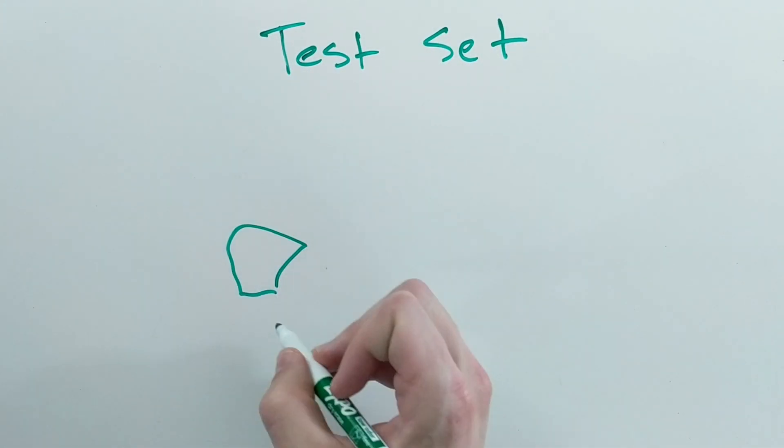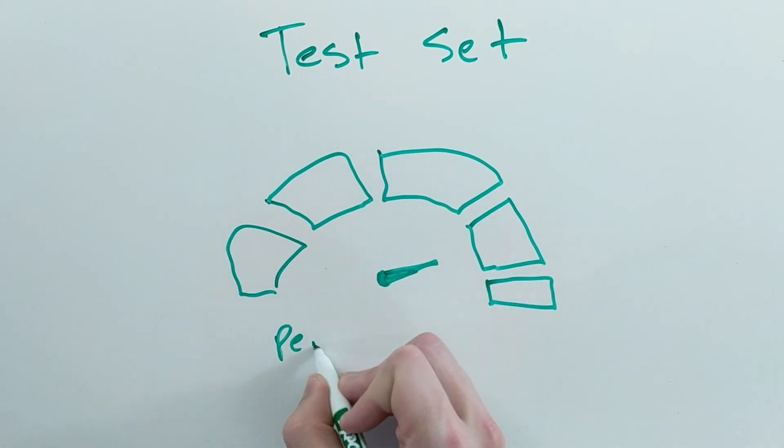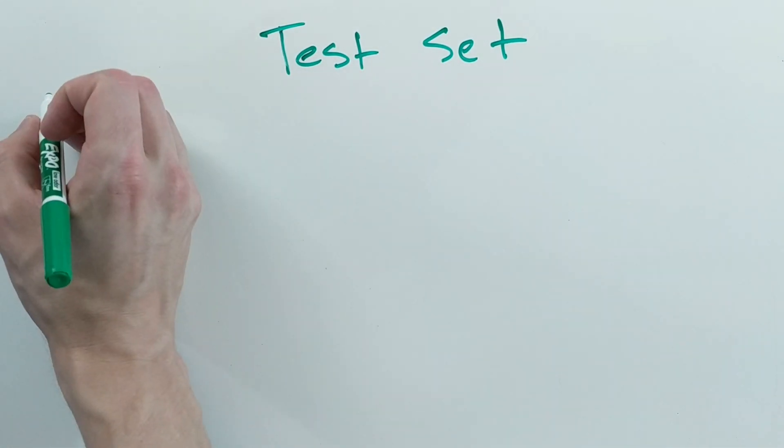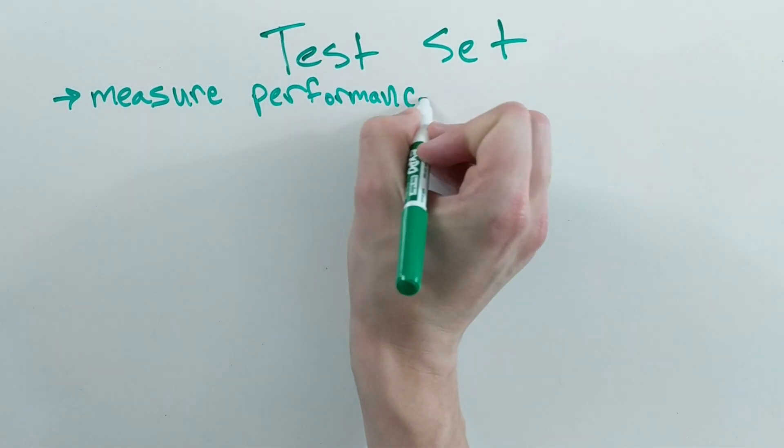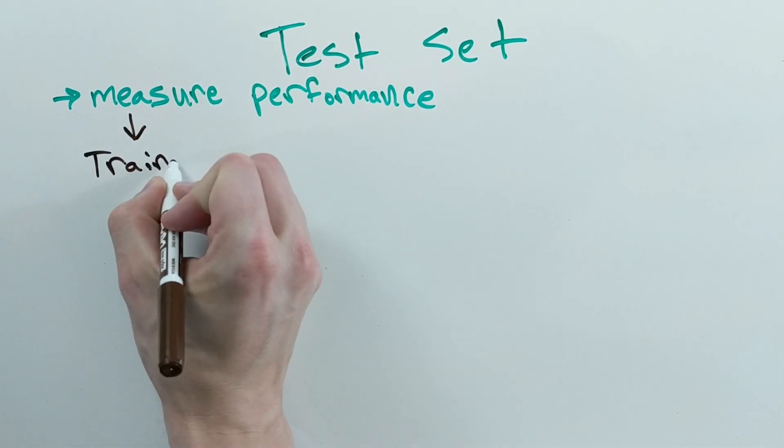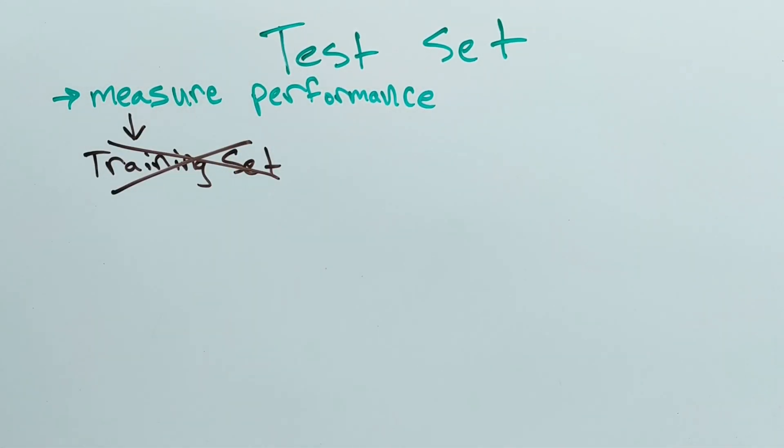The test set is only used to get a reading for how accurate your model is. Why can't you use the training or validation set to tell how well your model performs? You can't use the training set to measure performance because your model might have memorized some of the training data, which would mean a higher performance than on real data.